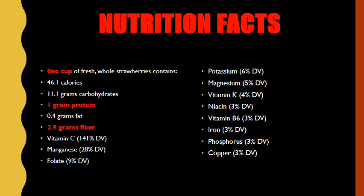Manganese comes in at 28% DV — an excellent source. Folate comes in at 9% DV — not a good source. Potassium at 6% DV, magnesium at 5% DV, vitamin K at 4% DV — none are good sources. Niacin, vitamin B6, iron, phosphorus, and copper all come in at 3% DV. Now, if you're concerned that strawberries aren't a good source of several vitamins and minerals, remember this is based on a single serving. If you eat two or three servings, those not-so-good sources can turn into good or even excellent sources.